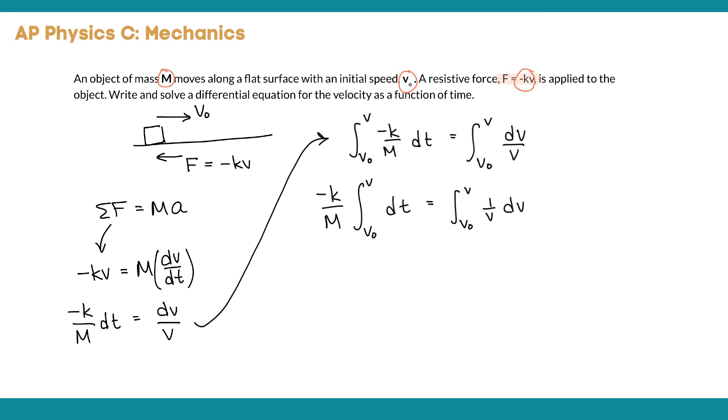On the right hand side, I'm just going to write that in another way that you may recognize. One over v dv—we can also write it that way—and you may recognize the integral of one over x as being the natural log of x. So negative k over m and then the integral of dt would just be t, and the integral of one over v dv is the natural log of v.